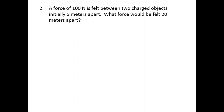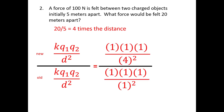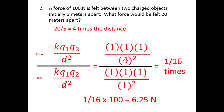This next one: you have a force of 100 newtons felt between two charged objects, initially five meters apart. What's it going to become when it's 20 meters apart? You take the after divided by the original and find out you have four times the distance. Put that into a ratio — ones for everything on the bottom, four times the distance on top. So 1·1·1 over four squared gives you one sixteenth times the original value of 100, which gives you 6.25 newtons as your answer.